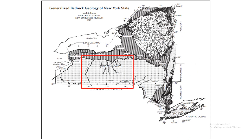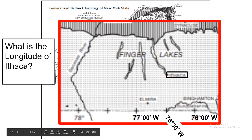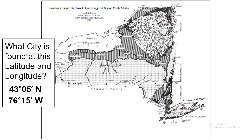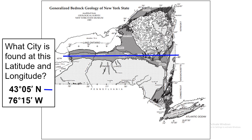Let's do a quick longitude one. Here we have 77 degrees west and 76 degrees west. In the middle is 76 degrees 30 minutes west. What's the longitude of Ithaca? Read straight up and down for longitude — 76 degrees 30 minutes. For the next question: what city is found at 43 degrees 5 minutes north, 76 degrees 15 minutes west? Find that latitude line and draw it, then find 76 degrees 15 minutes — since 76 degrees 30 is at the midpoint, 76 degrees 15 is a bit to the right. Read up and down and you get smack dab in the middle: Syracuse.